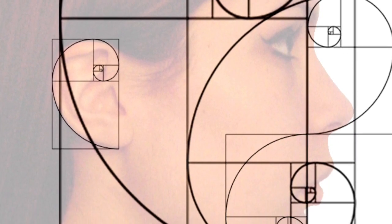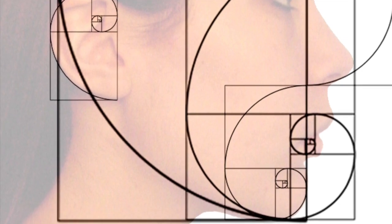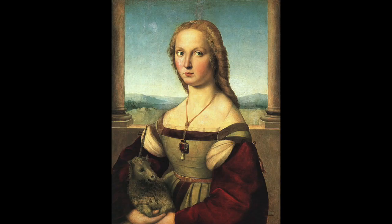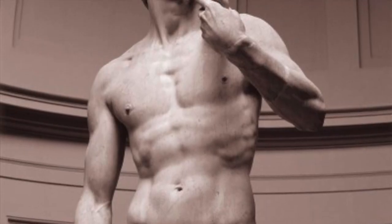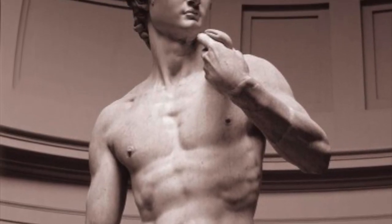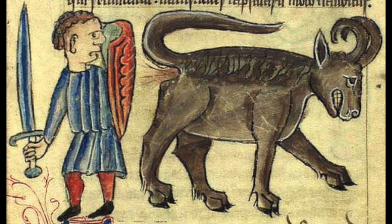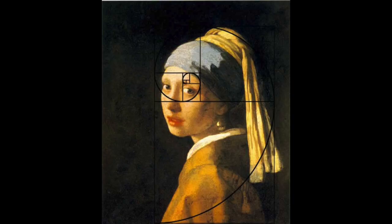Look at how the spiral fits into the profile of a human face. Pretty neat. During the Renaissance, proper proportions began to become evident in art — a drastic improvement from the somewhat crude proportioning of art from the Middle Ages. Notice how the small tiles and arcs align with the detailed features of this portrait, the Girl with the Pearl Earring.